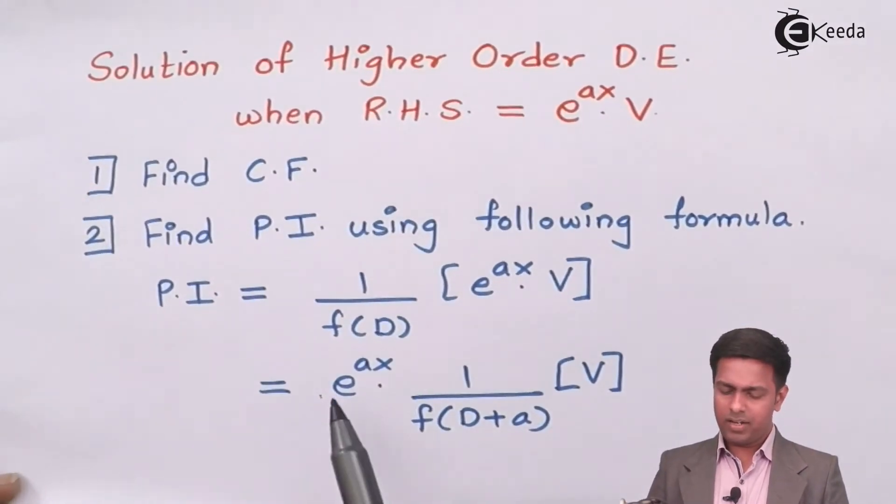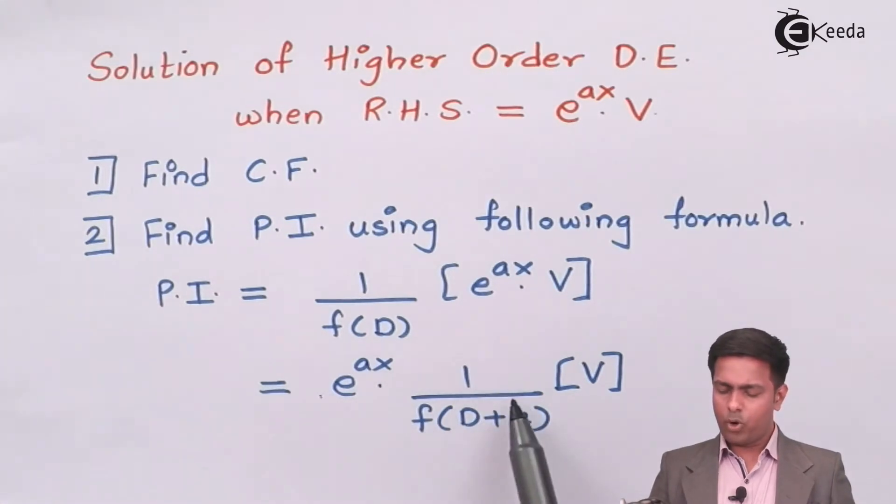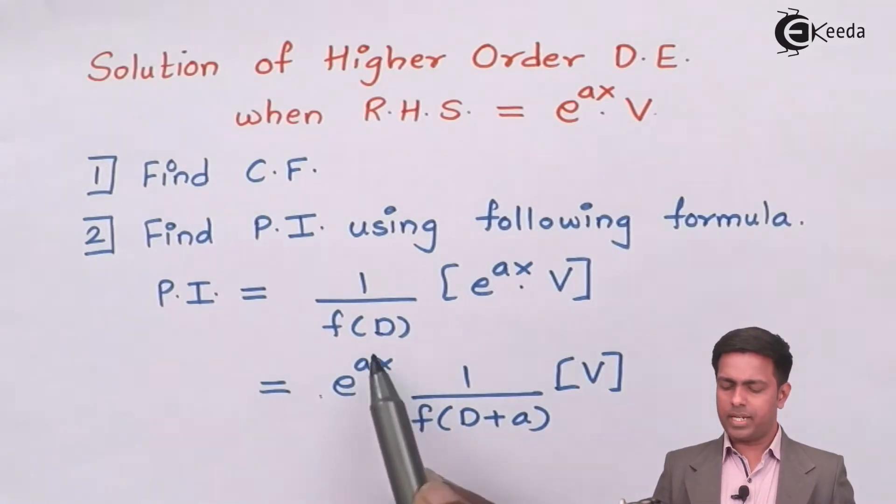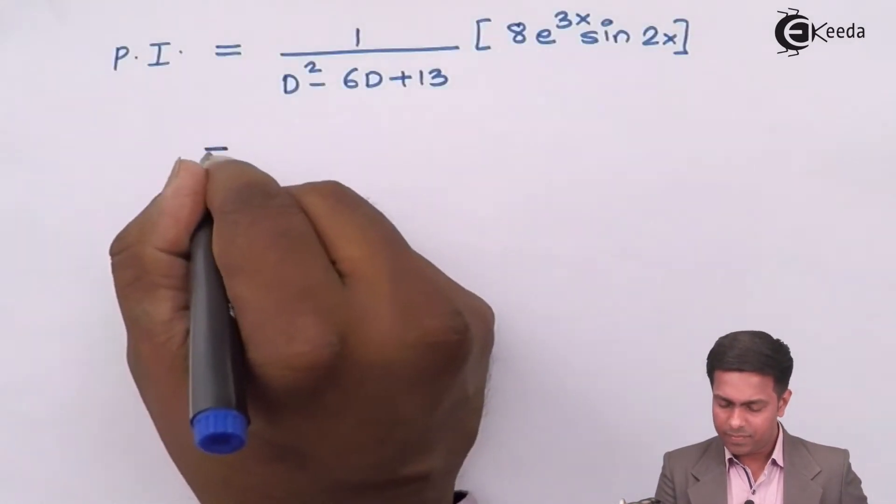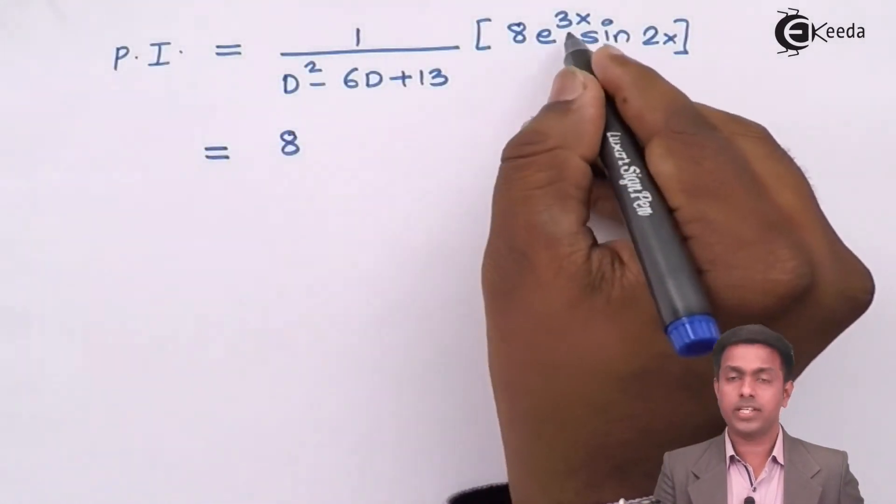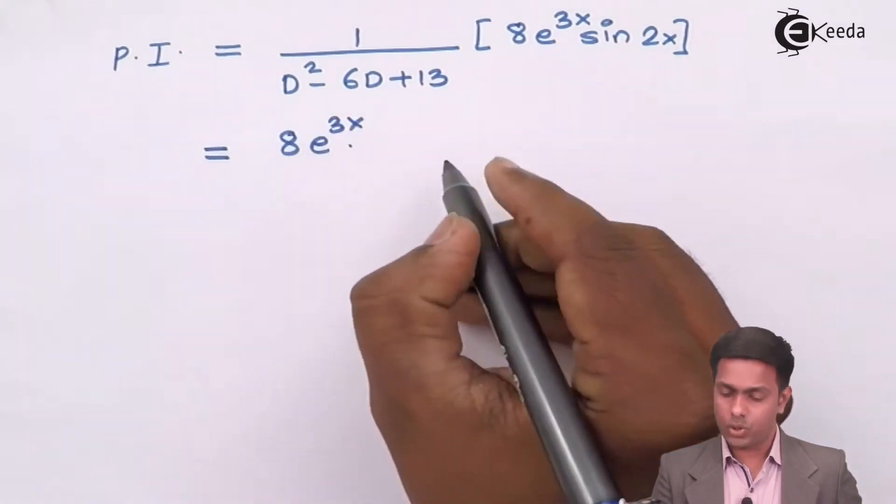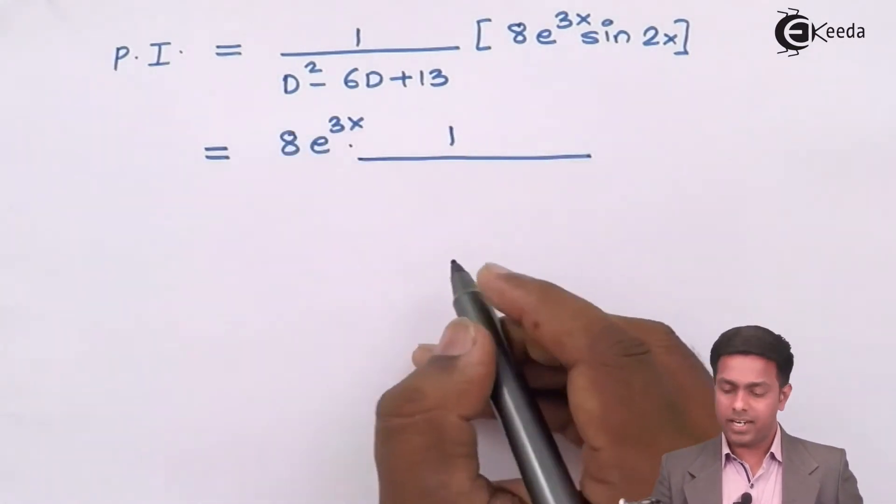That is given by this formula that is e to the power ax separate then 1 upon function of D plus a. Since my a is 3 in this question I will replace D with D plus 3. Here 8 is a constant outside e to the power 3x into 1 upon I will replace this D with D plus 3.